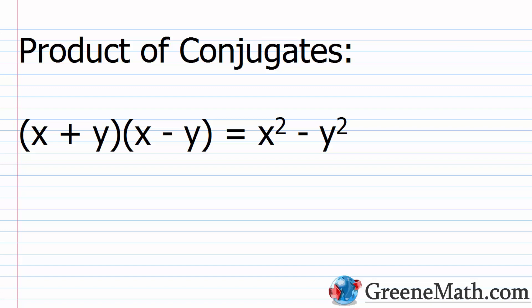Let's start out by talking about the product of conjugates. What are conjugates? Conjugates occur whenever we have the same two terms, but the sign is different. In this case, we have x plus y and x minus y. We have an x and an x, a y and a y, with a difference in sign — a plus and a minus.